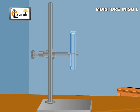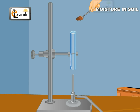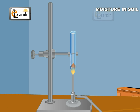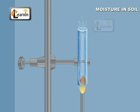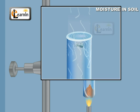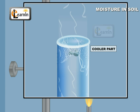Fix the test tube to the test tube stand and place a burner below the test tube. Put two spoons of sand in the test tube. The water in the soil evaporates on heating the test tube and condenses on the cooler parts of the tube.